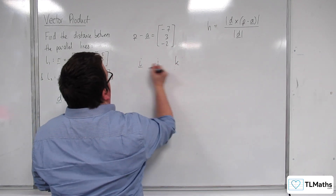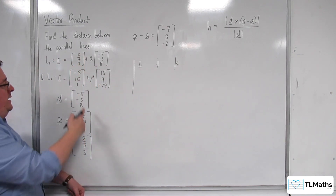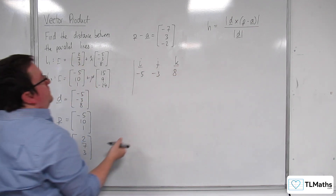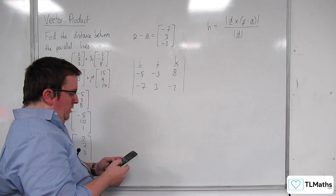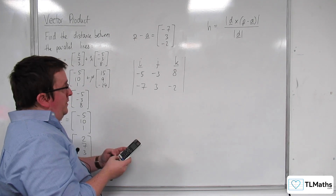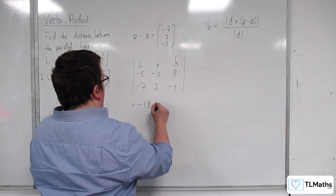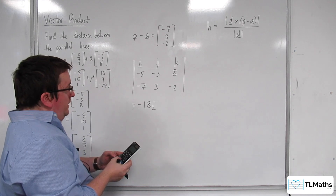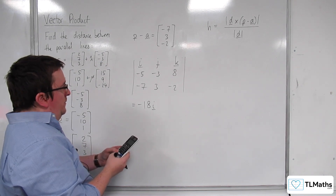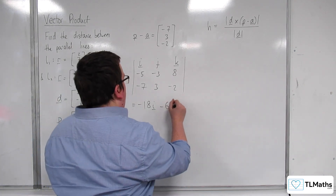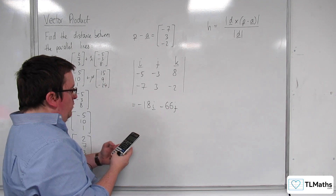Then we're going to have to find the vector product of D and (P − A). So we have minus 5, minus 3, 8 and minus 7, 3, minus 2. We get minus 3 times minus 2 take away 8 times 3, so that's minus 18 i. Then minus 5 times minus 2, so 10, take away minus 7 times 8, so that's minus 66 j. And then we've got minus 15 take away 21, so minus 36 k.